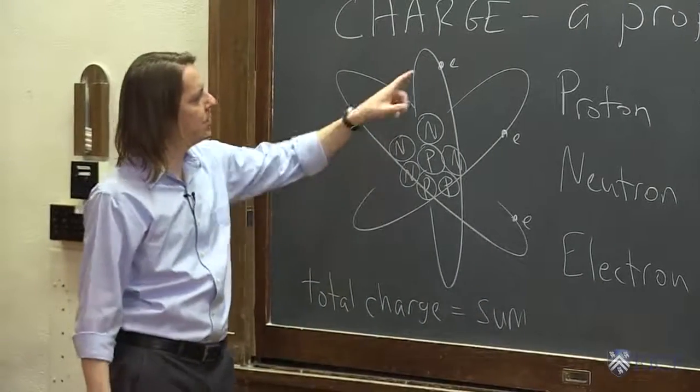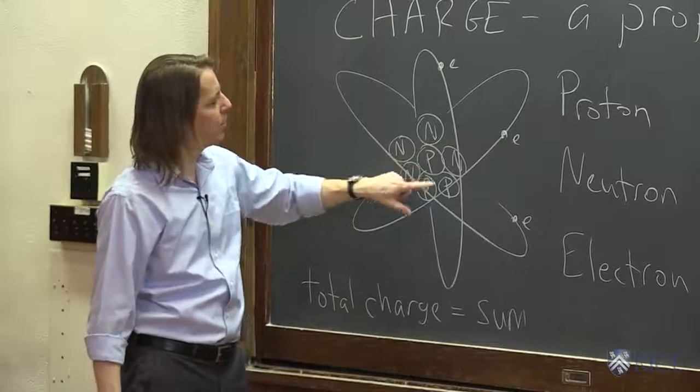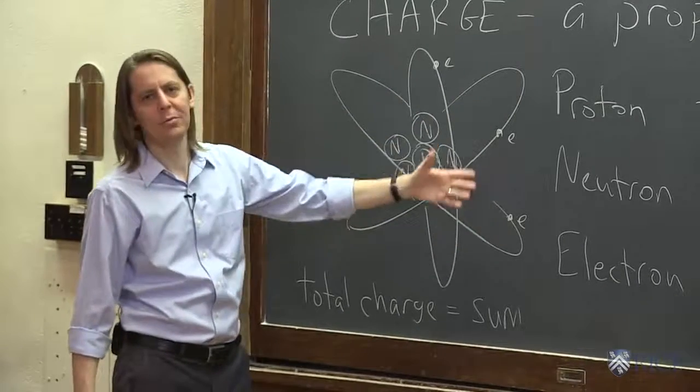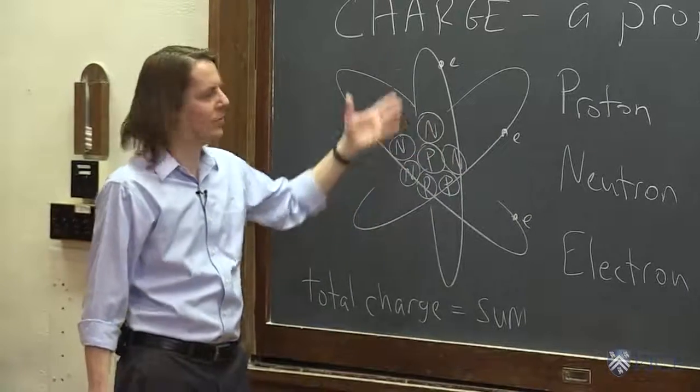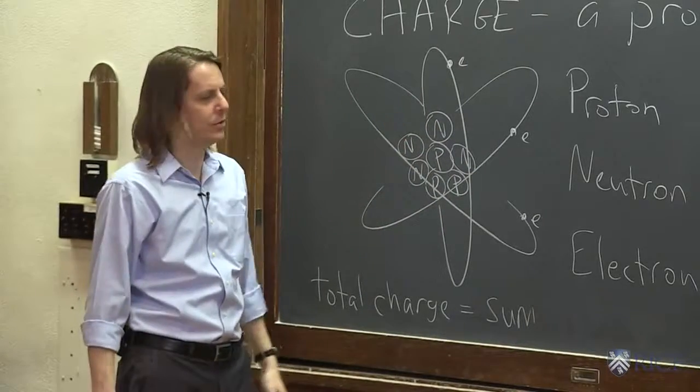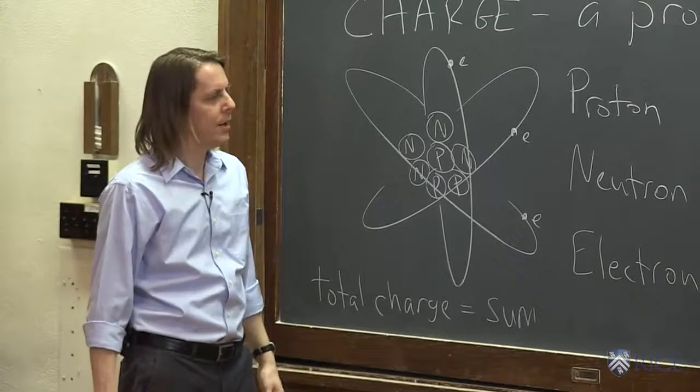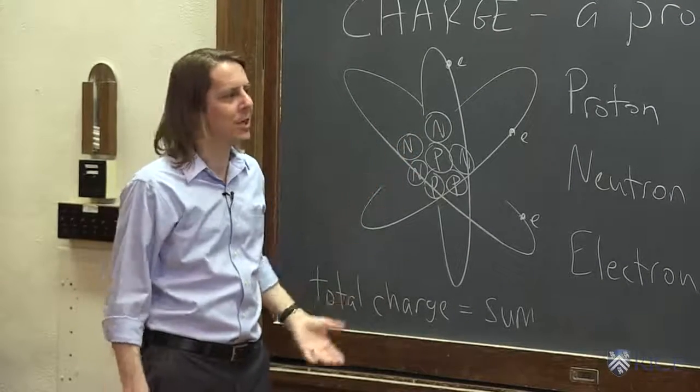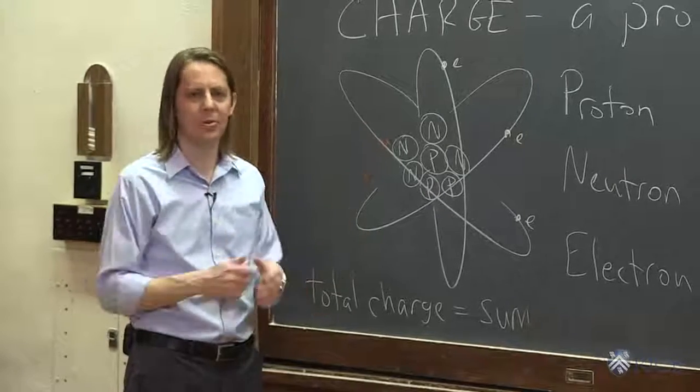You just add up all the charge. So the total charge here is plus 1, plus 1, plus 1. That's plus 3. Minus 1, minus 1, minus 1. That's minus 3. It's 0. Right? This is a neutral atom because the charge is balanced and they make 0. Okay? So that's the basics of charge and where it comes from fundamentally and now we'll start scaling up and looking at larger things.